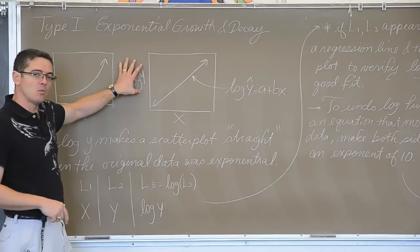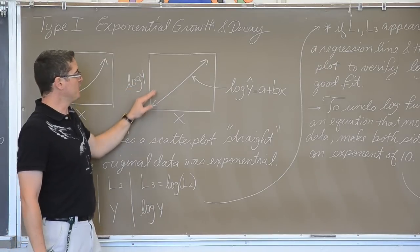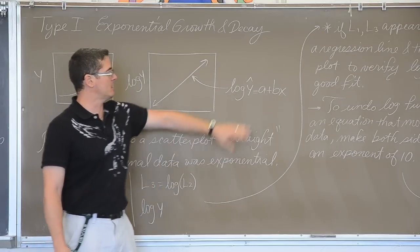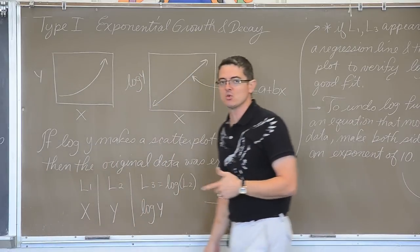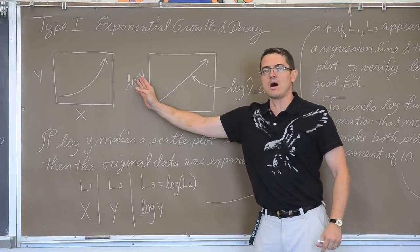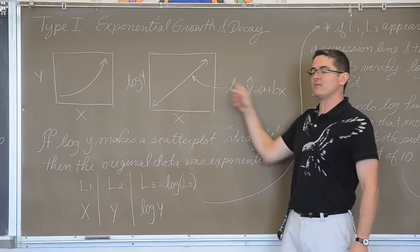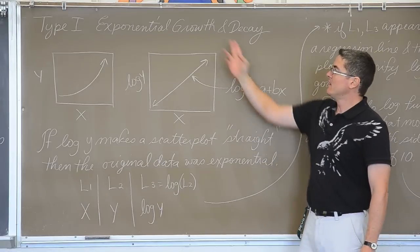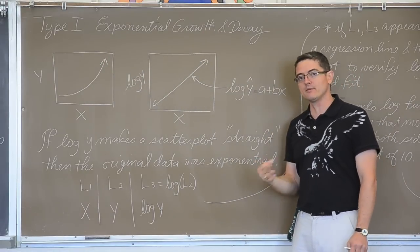If you take the log of the y values and remake the scatter plot, if it looks to be straight, and you can verify that by making a regression line and then checking it with a residual plot, if you have curved data, you log the y's, just the y's, and you get a linear pattern, then you have just proven or shown yourself that that original data was exponential growth or decay.